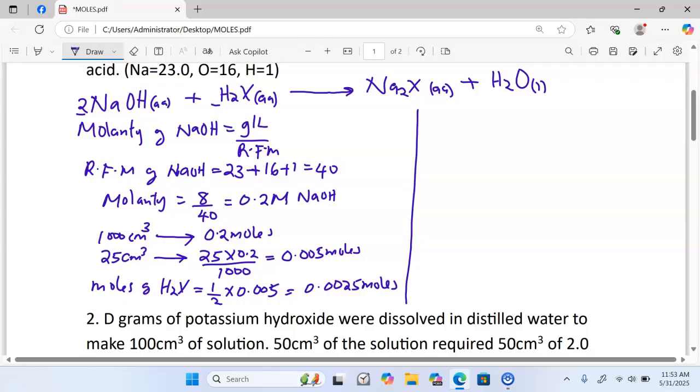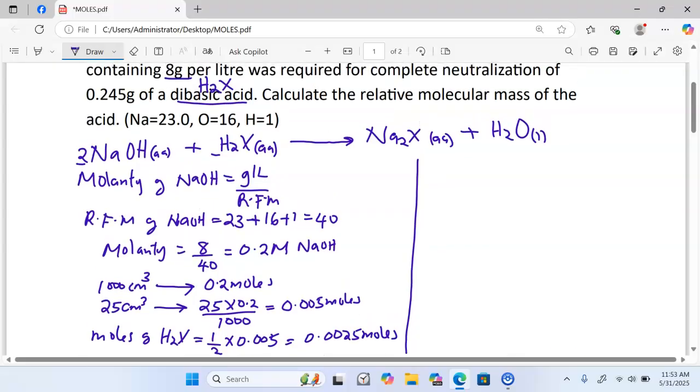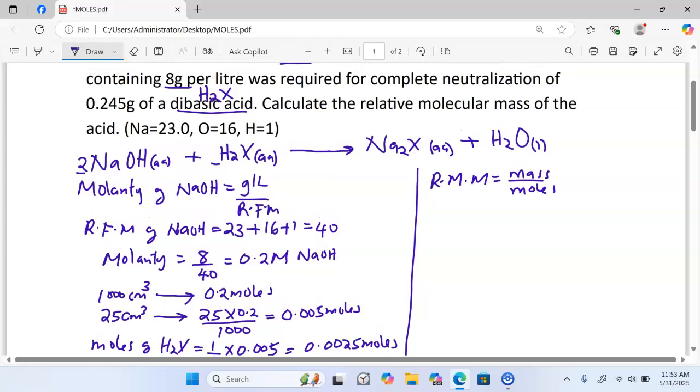Once we have the number of moles of the dibasic acid, we can simply get the relative molecular mass, which is the same as the molar mass. We know the relative molecular mass is usually given by taking the mass to divide by what we call moles. The mass that reacted was 0.245, we have it here, 0.245 divided by the number of moles, which is 0.0025, and this one is going to give us exactly 98 as the answer.